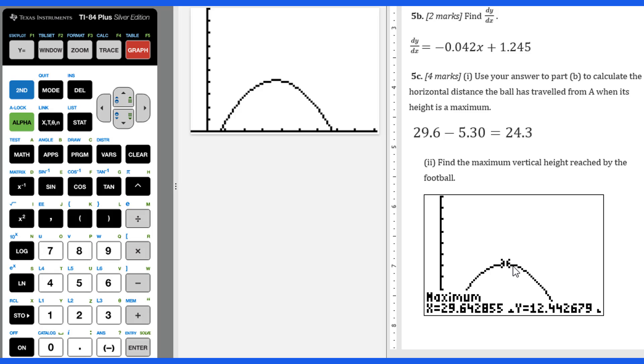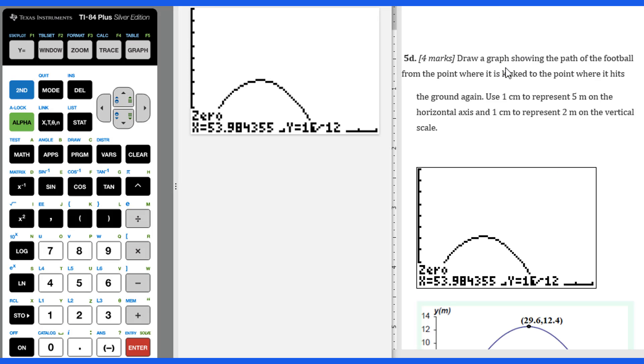From this, we already figured out the maximum vertical height reached by the football will be 12.4 meters. For 5d, draw a graph showing the path of the football from the point where it is kicked to the point where it hits the ground again. Use 1 centimeter to represent 5 meters on the horizontal axis and 1 centimeter to represent 2 meters on the vertical scale.